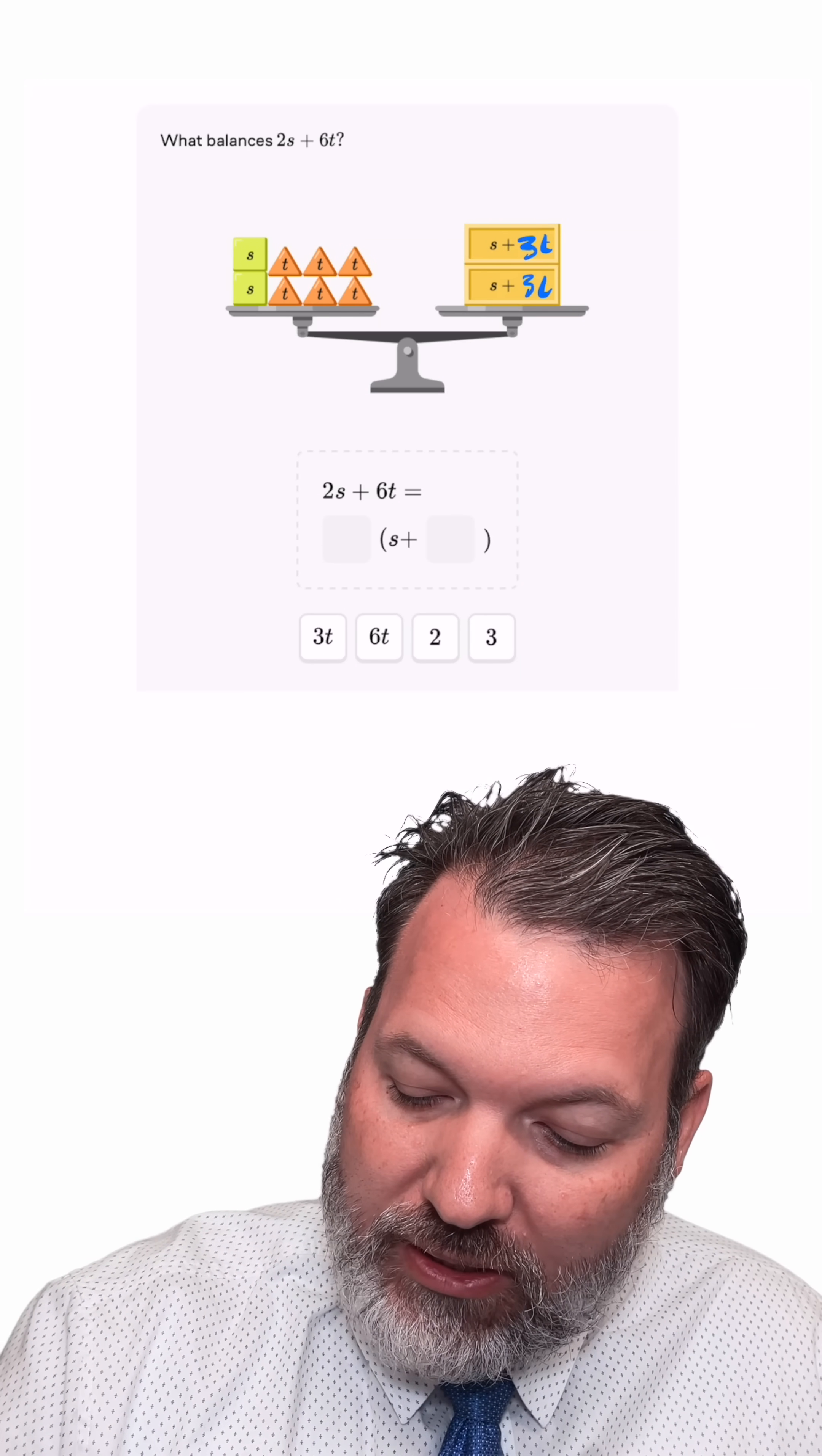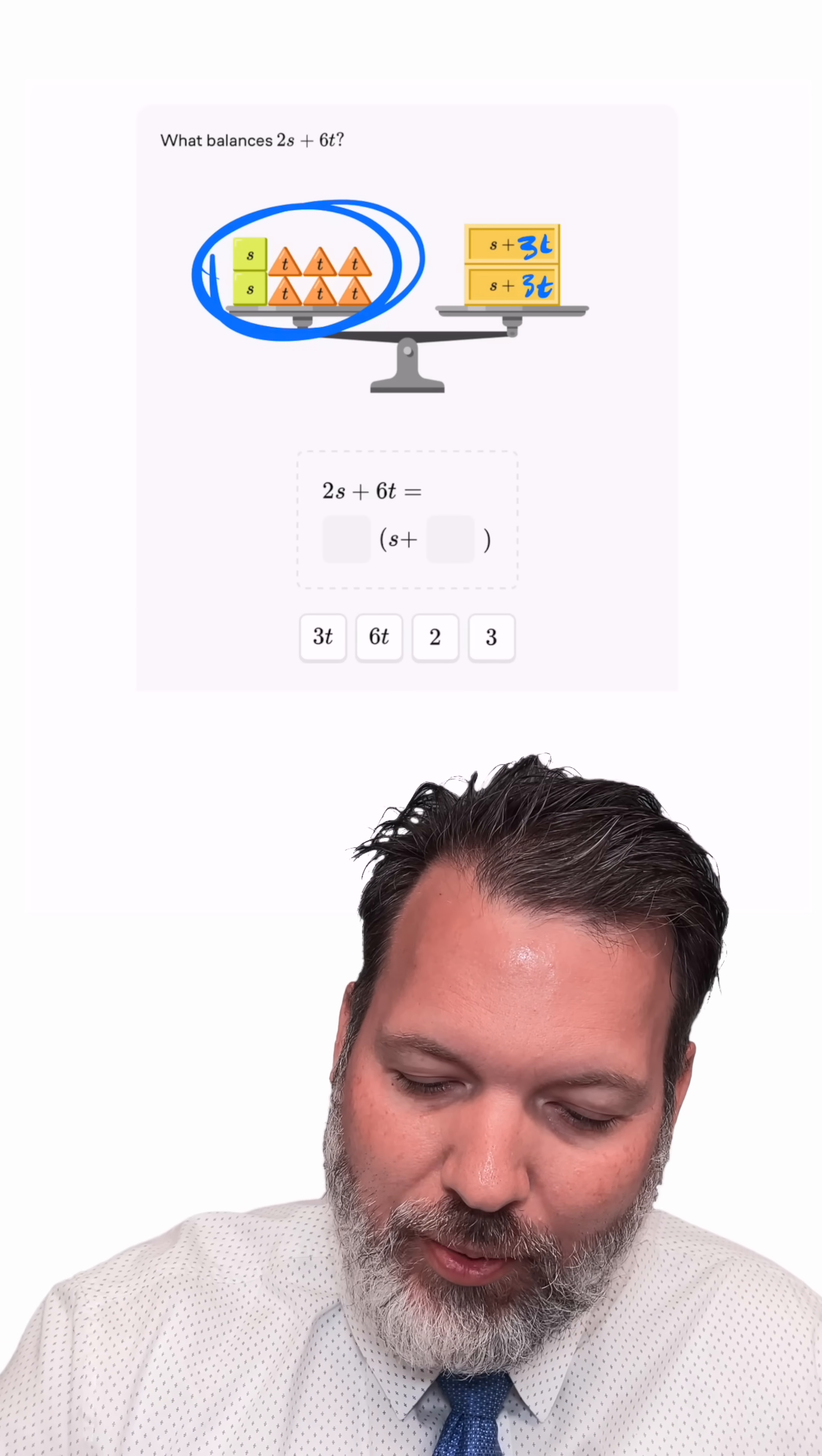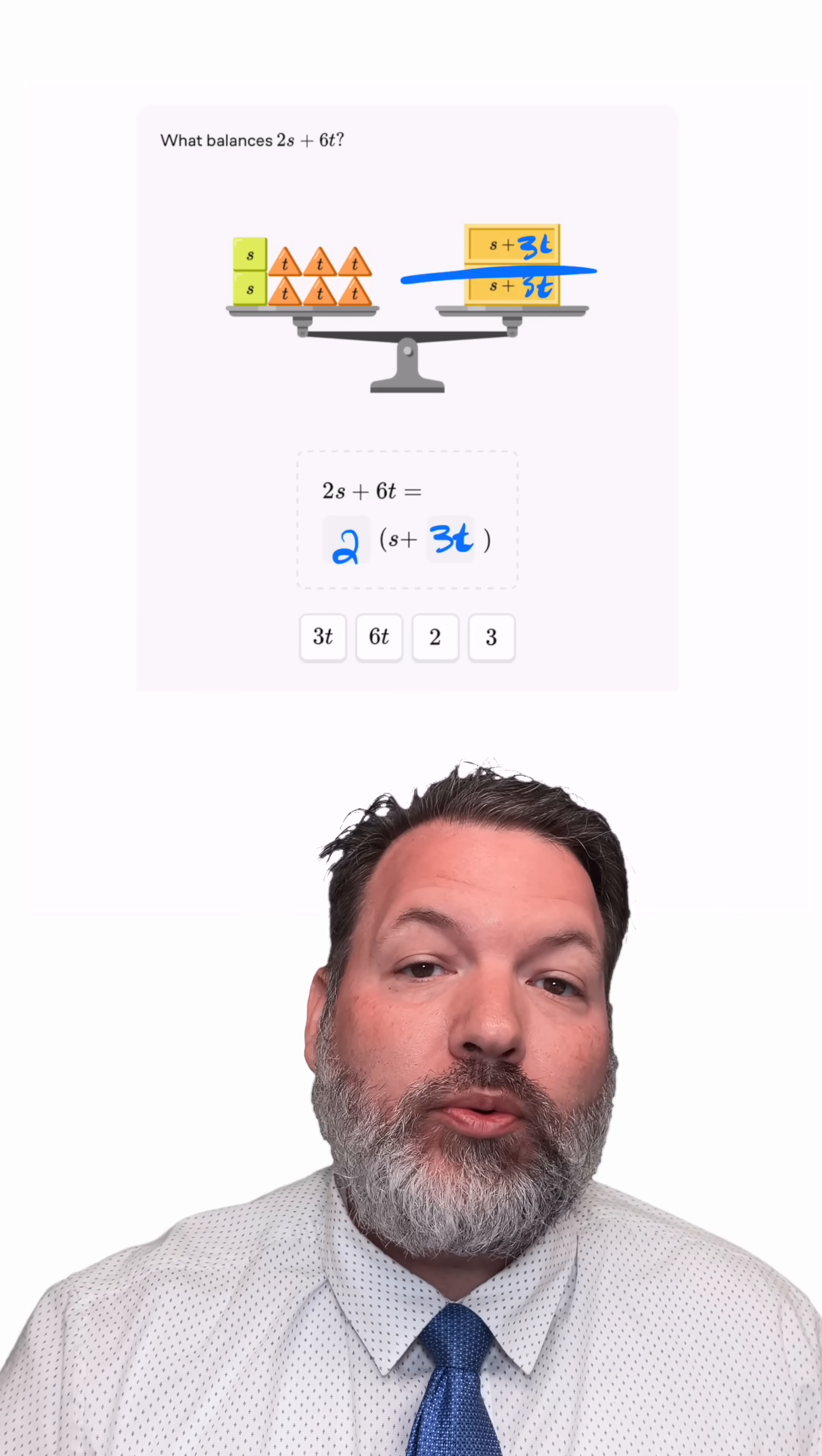Because of the way it's stacked here, we can see pretty easily, we need to pack away 3 triangles along with 1 square to get this scale to balance out. But that's just another way of saying that all this stuff on the left, 2s and 6ts, is actually just the same thing as 2 boxes of an s plus a 3t.